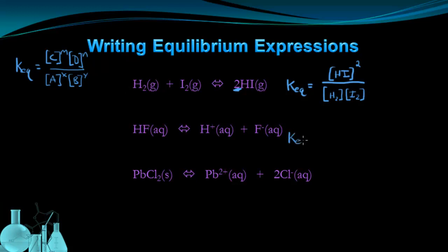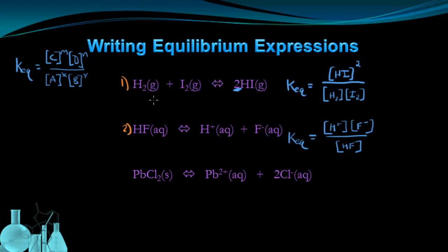For the second reaction — the dissociation of hydrofluoric acid HF — KEQ equals the concentration of H⁺ times the concentration of F⁻, over the concentration of HF. Here we have two products and one reactant, and nothing has a coefficient other than 1. Notice that in both of these reactions, the phases are the same throughout — all gas or all aqueous — so these are examples of homogeneous equilibrium, where all participating substances are in the same phase.